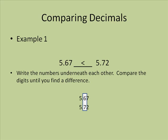The first column, they both had a 5, but in the second column, one was a 6 and the other had a 7. Since 7 is greater, that means that whole number is greater. The larger number is 5.72.